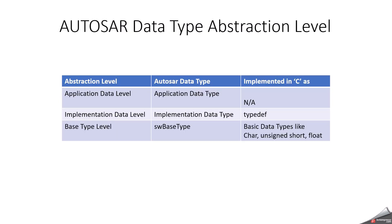In Autosar, data types can be defined at different abstraction levels. For example, at the application data level, we call it an application data type — but this is not going to be implemented directly in C; it is not related to that. In the implementation data type, this will create a typedef. So wherever you see an RTE.h or RTE.c file with a typedef, that was created with the implementation data type. The software base type is like a basic data type — such as char, unsigned int, unsigned short, or float — all the data types you have seen in C language fall under the software base type.